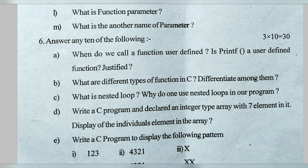What are the different types of functions in C? Distinguish among them. There are two types of functions in C: user-defined and library functions. The functions which we define ourselves are known as user-defined functions. The functions which are already defined in a header file or library are known as library functions — for example, printf and scanf are library functions.